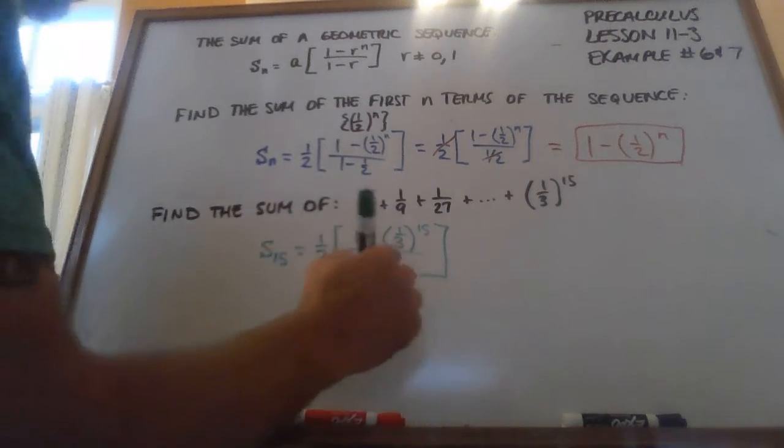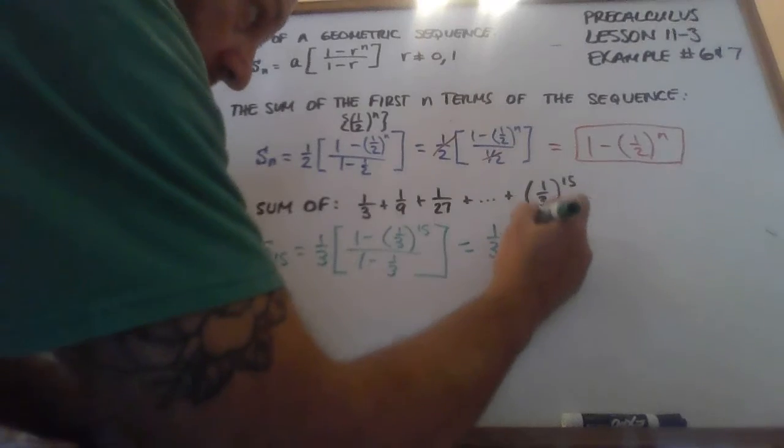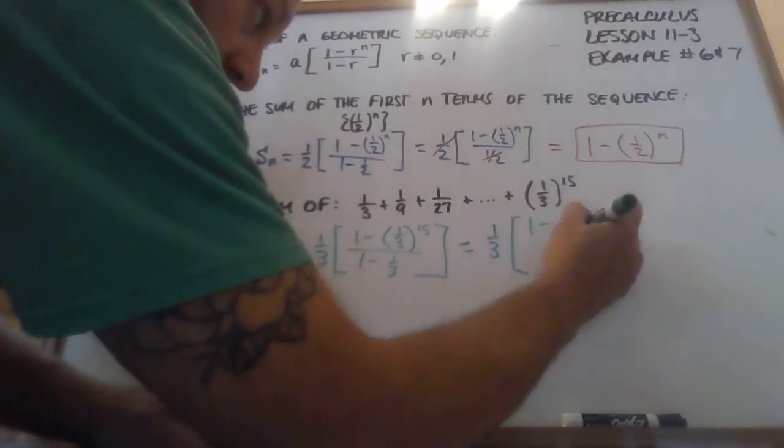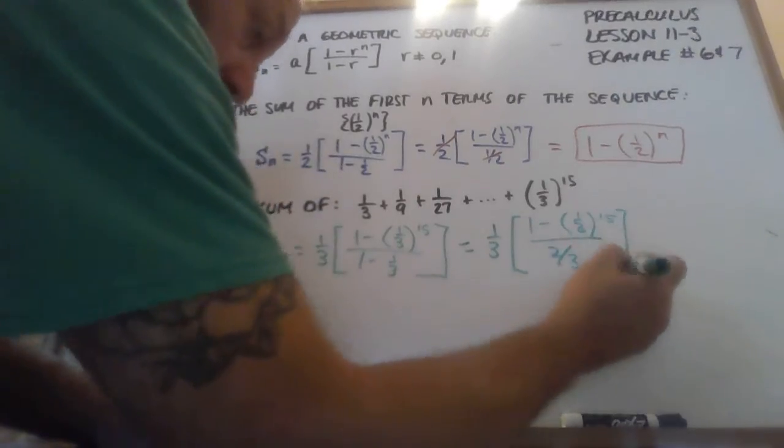Okay, so 1 minus 1 third, that's 2 thirds. So this is 1 third, times 1 minus 1 third to the 15th power, divided by 2 thirds.